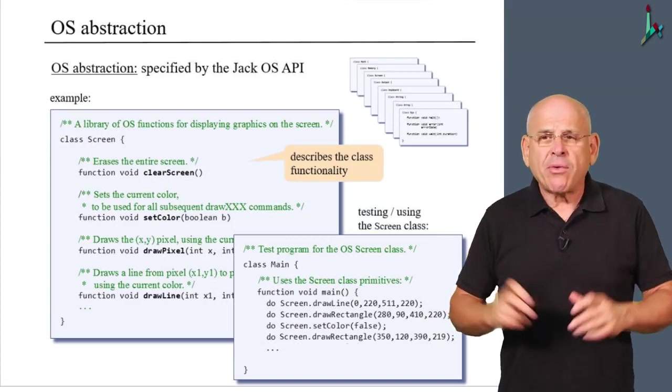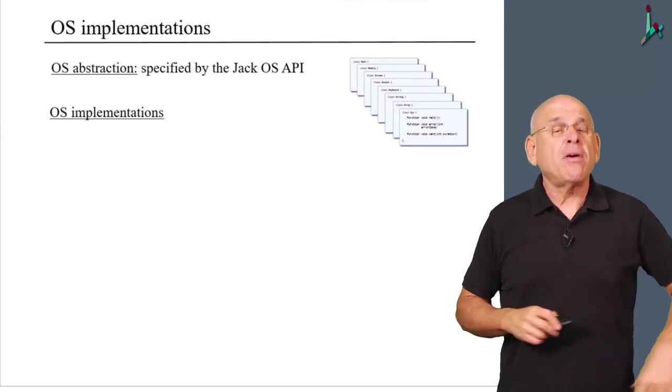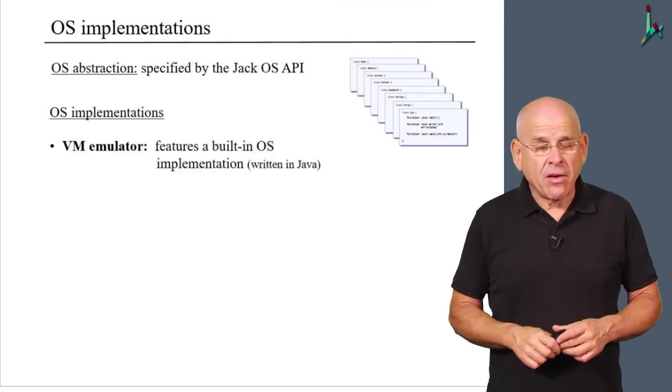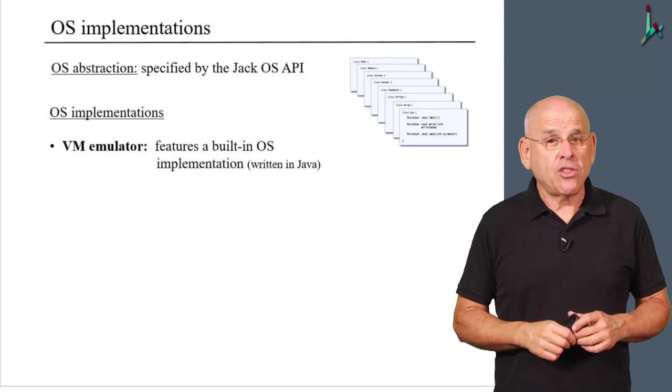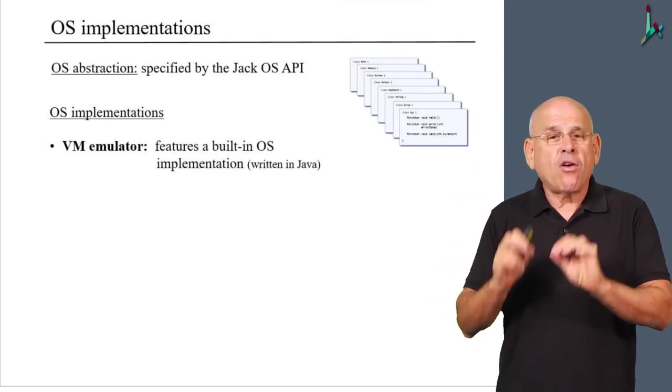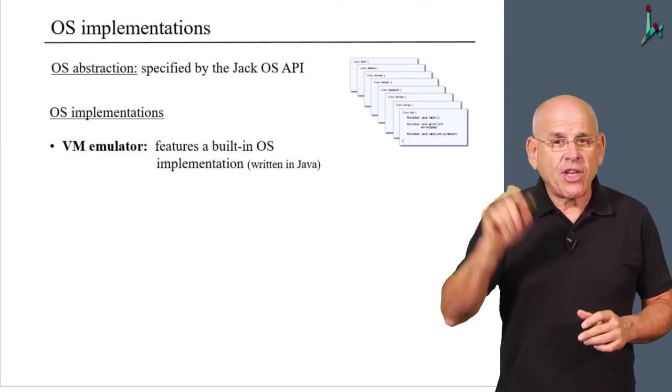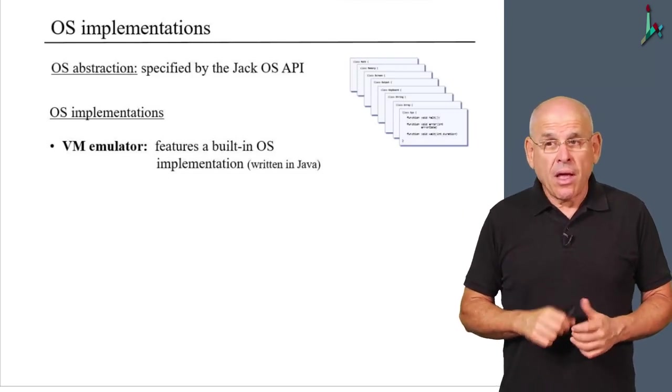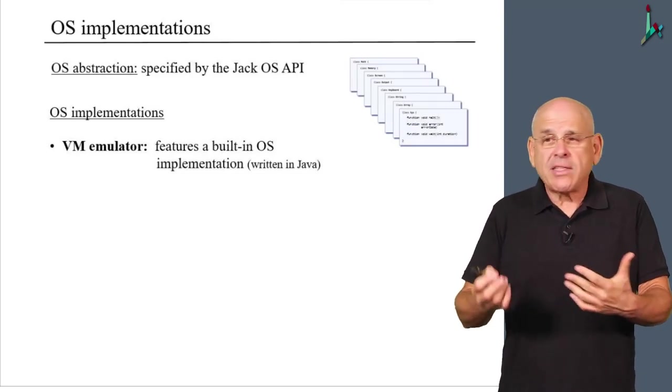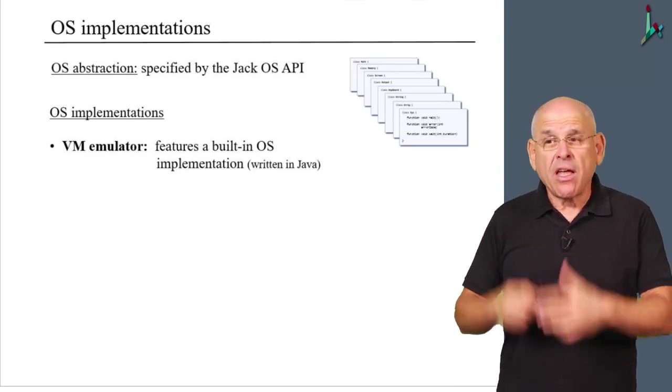And in particular, in Nand2Tetris, we are going to find three different implementations of the same OS abstraction. First of all, the supplied VM emulator, which is a fancy Java program that we wrote several years ago. Well, this VM emulator also has a built-in Java-based implementation of the Jack operating system. So when you execute a program in the VM emulator, if you find a call to, let's say, memory.alloc, the VM emulator knows how to service it using Java.